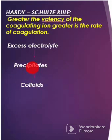When excess electrolyte is added to the colloids, the colloids precipitate. The reason is that the particles of the colloids interact with the ions of the electrolyte which have opposite charge to that of the colloids. Because of this, they get neutralized and so the colloids precipitate.